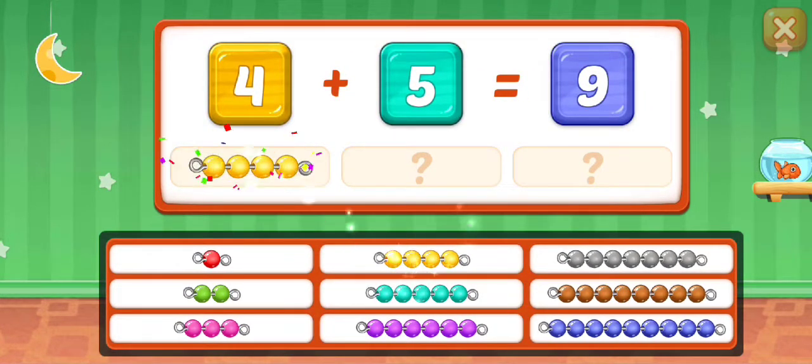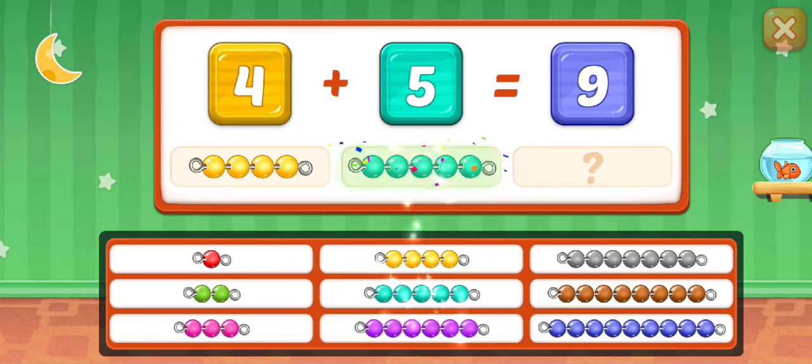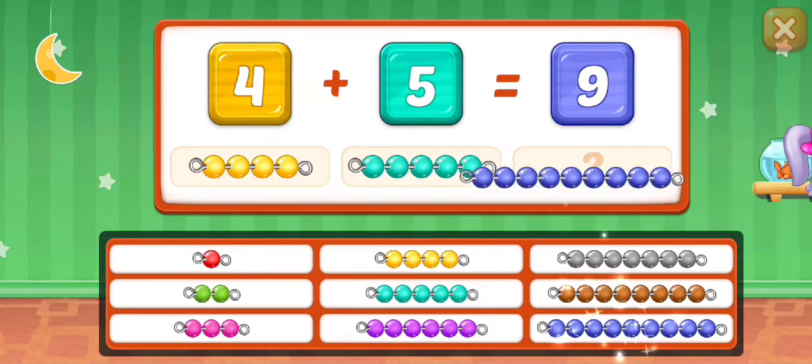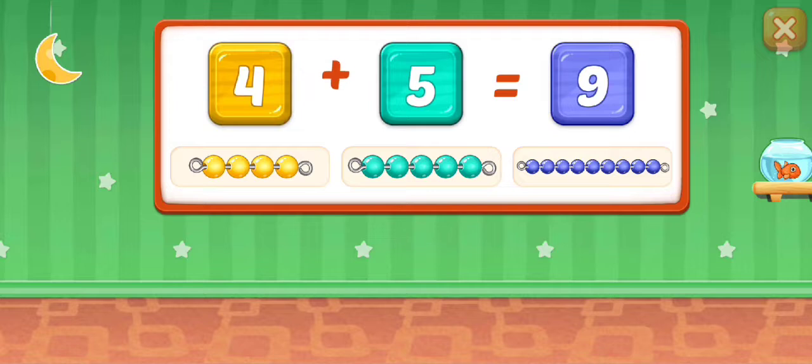Four, five. Perfect! Nine. Four plus five equals nine.